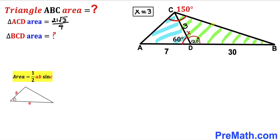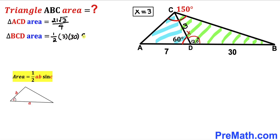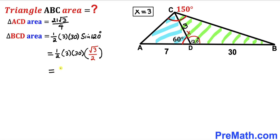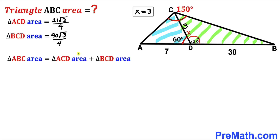For triangle BCD, the two sides are 3 and 30 with an included angle of 120 degrees. So the area equals one-half times 3 times 30 times sine of 120 degrees. Since sine of 120 degrees is root 3 over 2, this simplifies to 90 root 3 divided by 4.